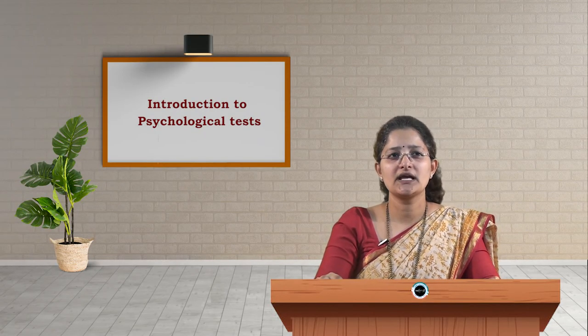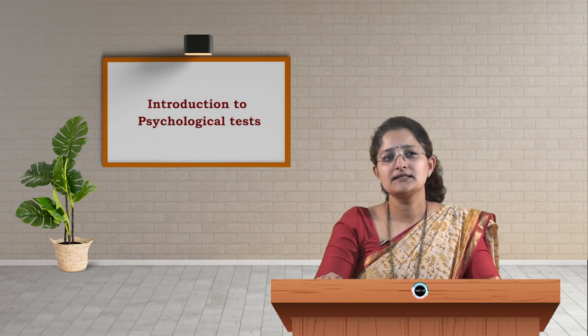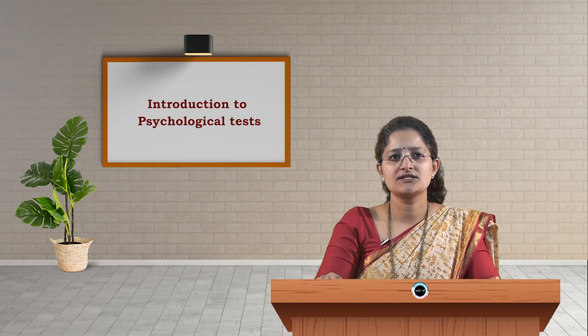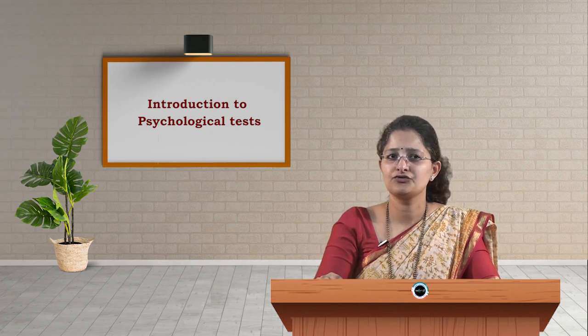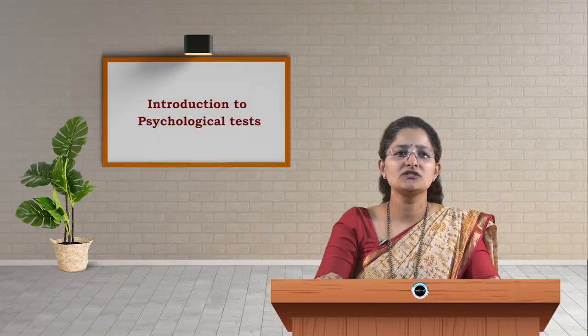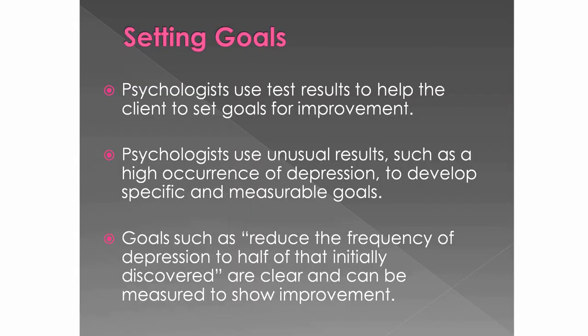The first use of psychological tests is the setting of goals. Psychologists use test results to help clients set goals for improvement. Unusual results — such as a high occurrence of depression — are used to develop specific and measurable goals. For example, a goal such as reducing the frequency of depression to half of the initially discovered level is clear and can be measured to show improvement.